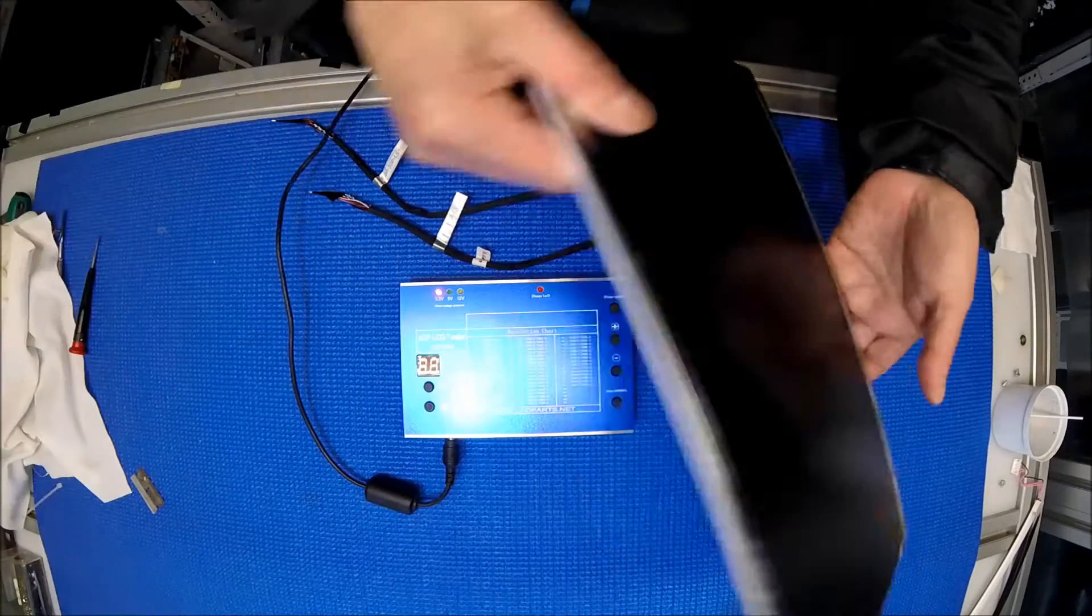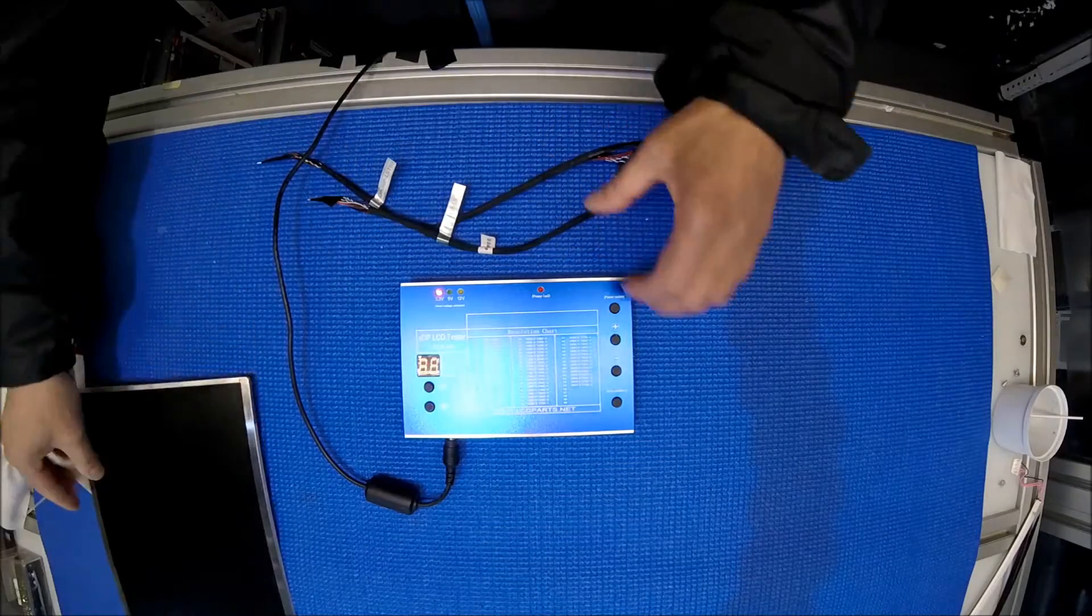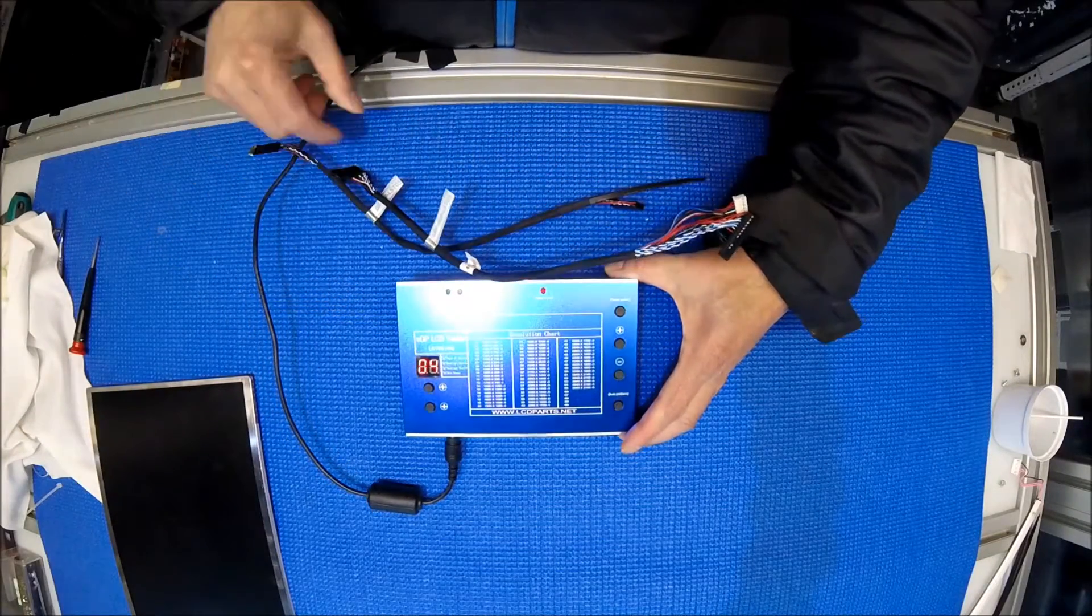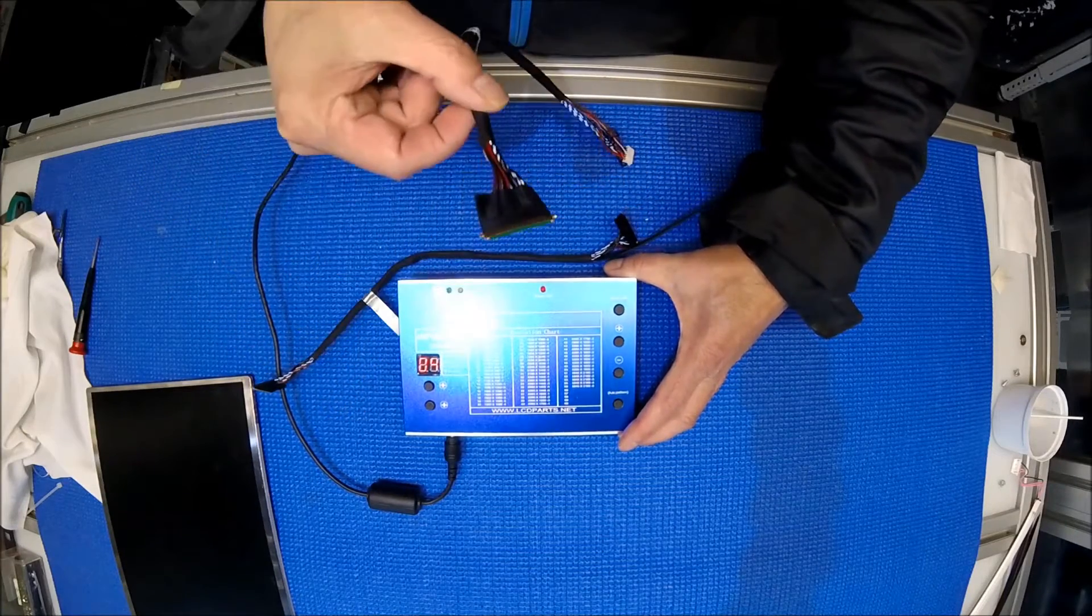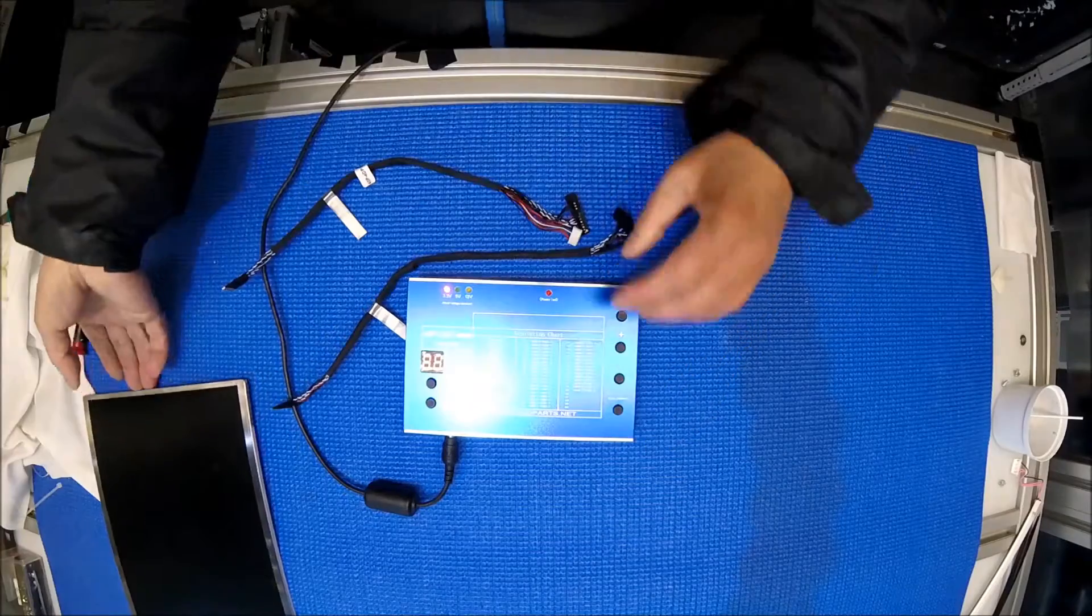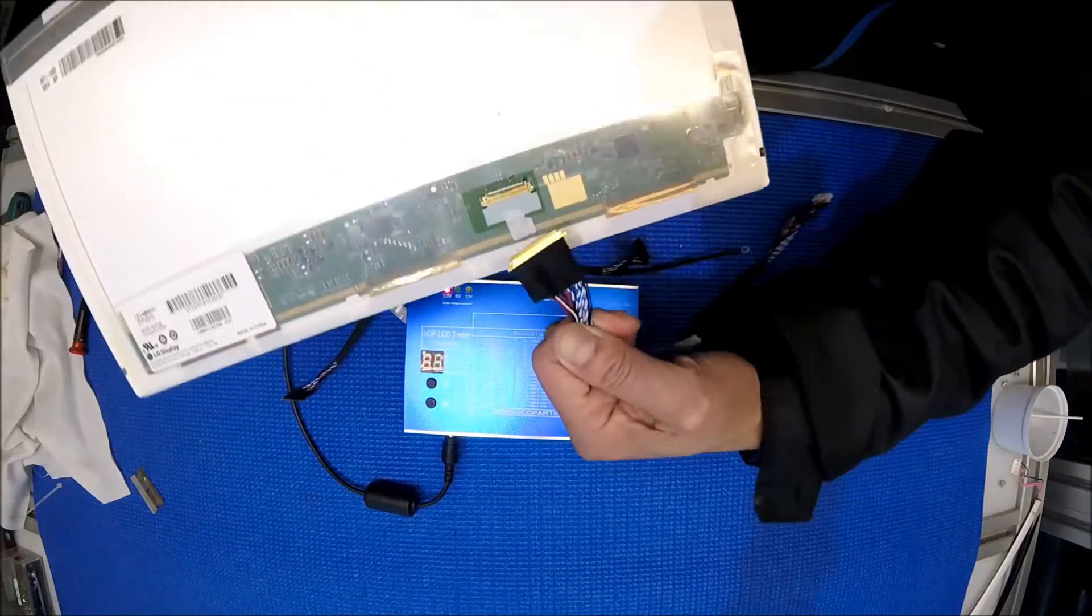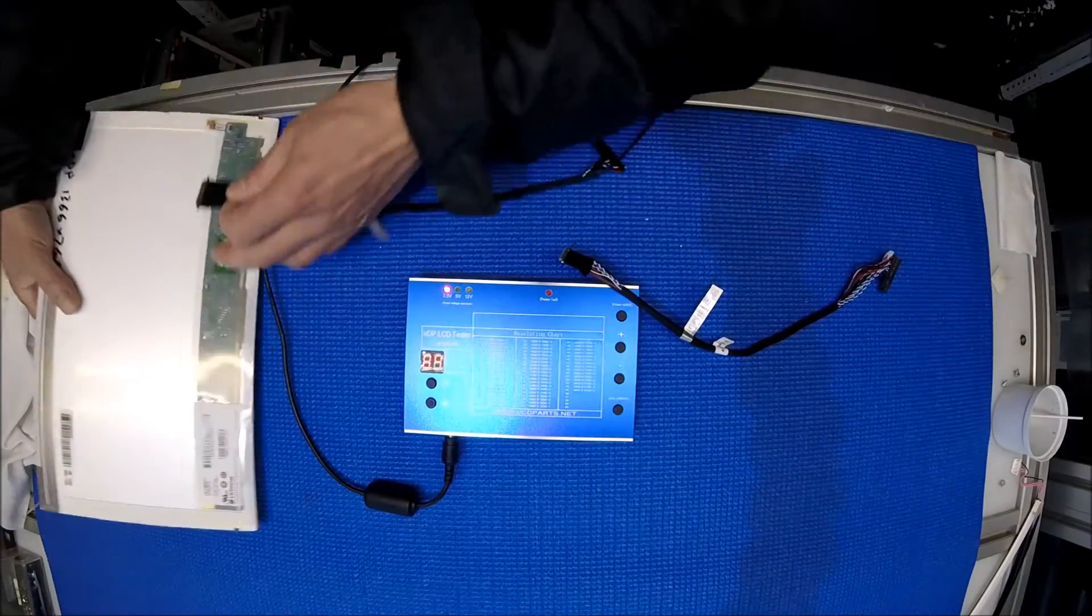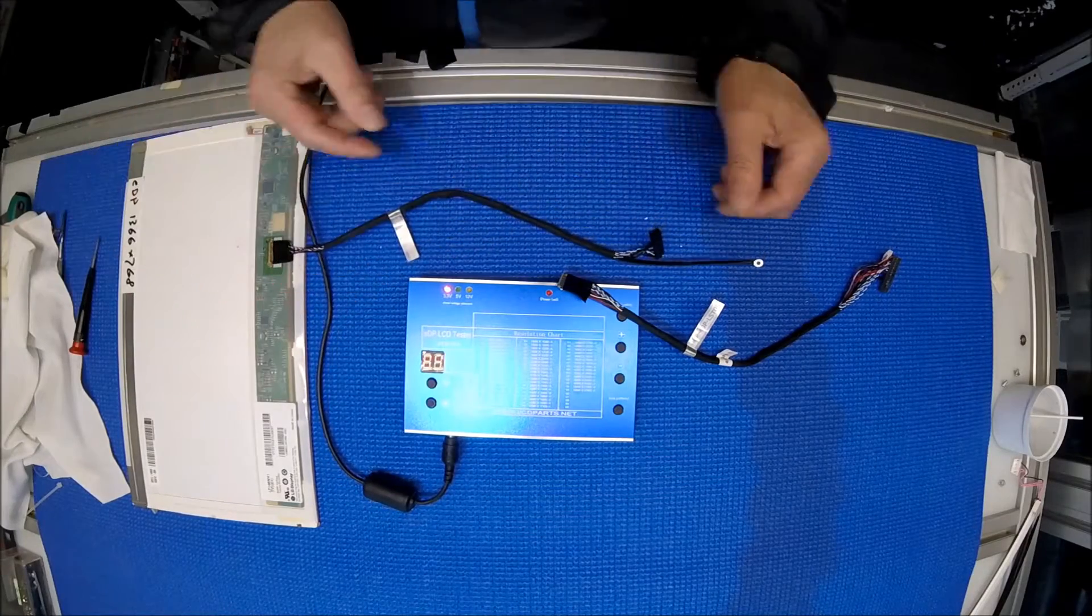I have a screen here. This one is 1360 by 768. This version 2 is same as version 1, it comes with two wire harnesses. One is a 30-pin EDP, the other one is a 40-pin EDP. This one is using the 30-pin as you can see, because 40 is not going to fit.